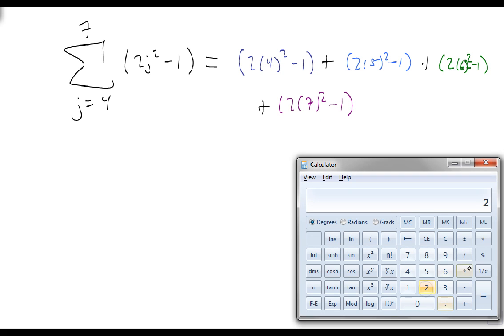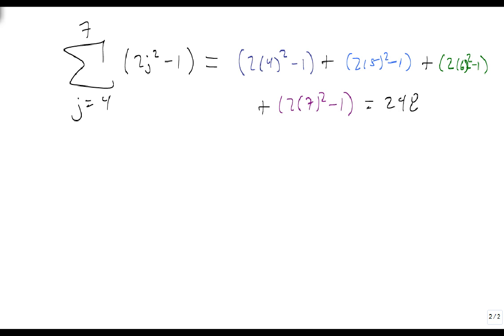So I'm going to type this into my calculator. 2 times 4 squared minus 1 plus 2 times 5 squared minus 1 plus 2 times 6 squared minus 1 plus 2 times 7 squared minus 1 equals. And the sum of the terms from a4 to a7 is equal to 248.